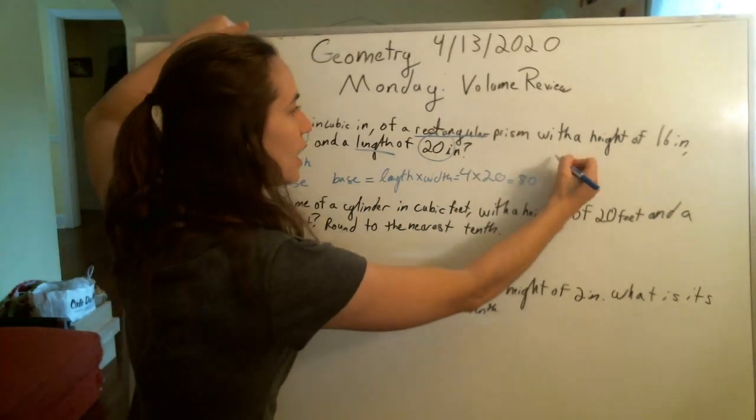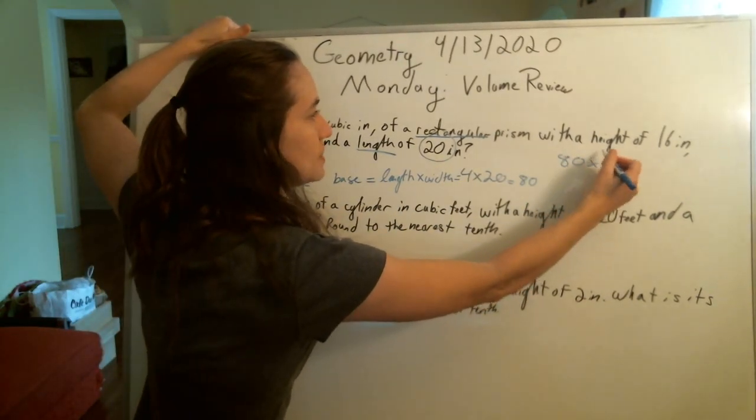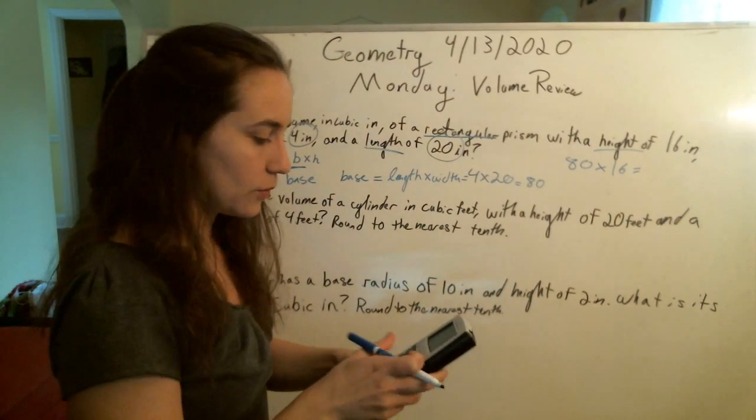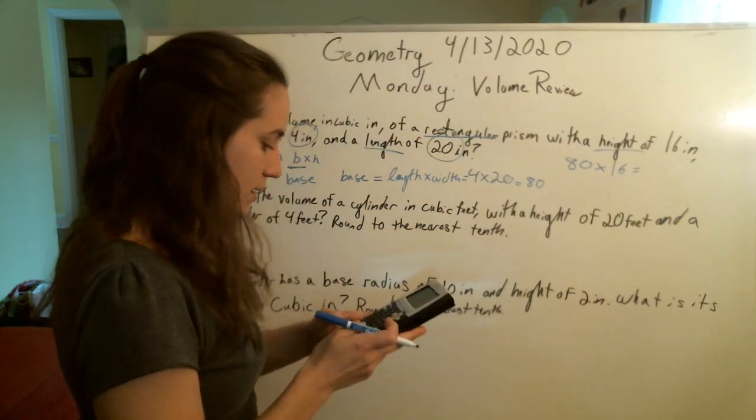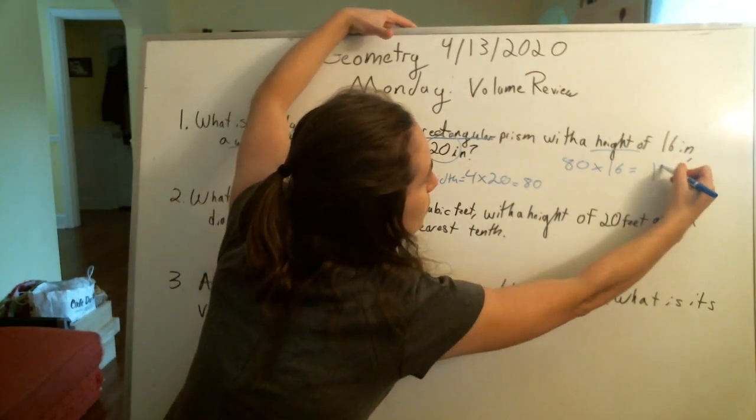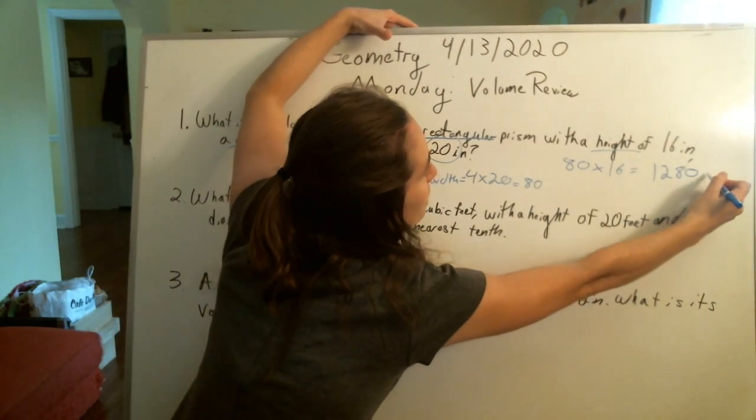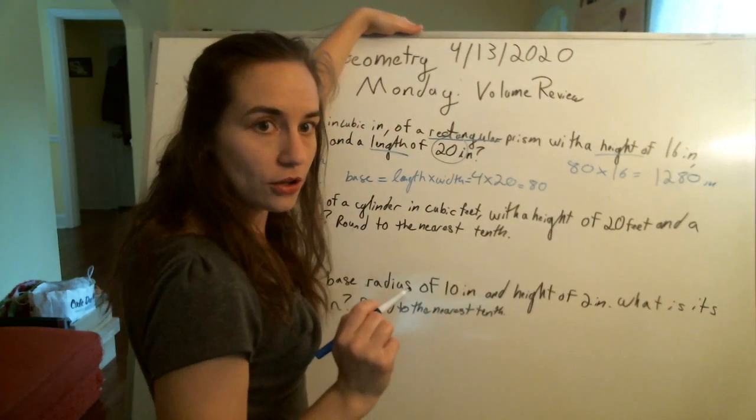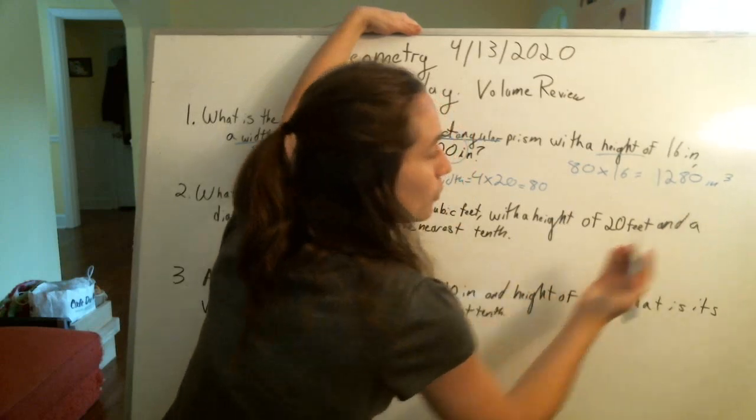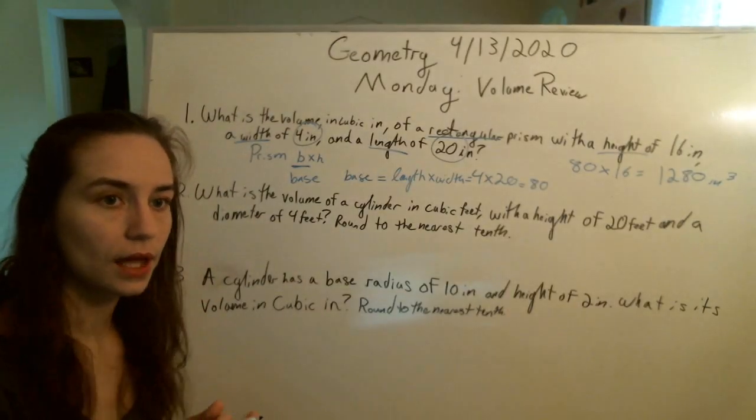And then we're going to take our base times our height, so 80 times 16. I don't know that in my head, so give me one second. 80 times 16, that's going to be 1,280, and then we'll have inches, and if it's a volume, it's not squared, it's not plane, it's cubed. We're working in the 3D, volume is 3D.